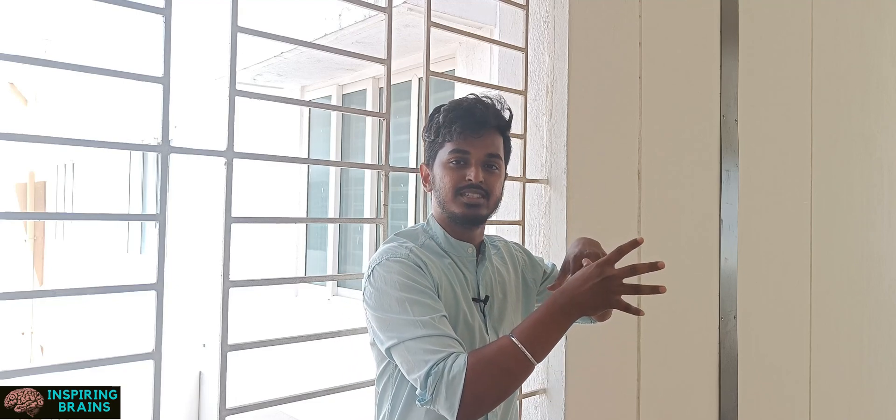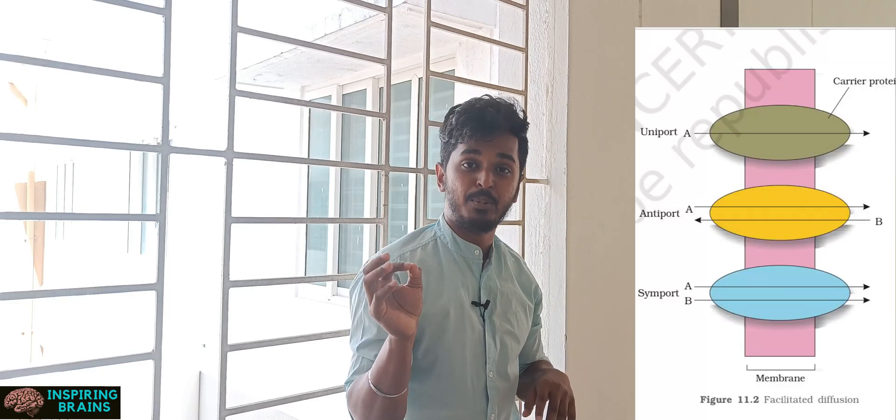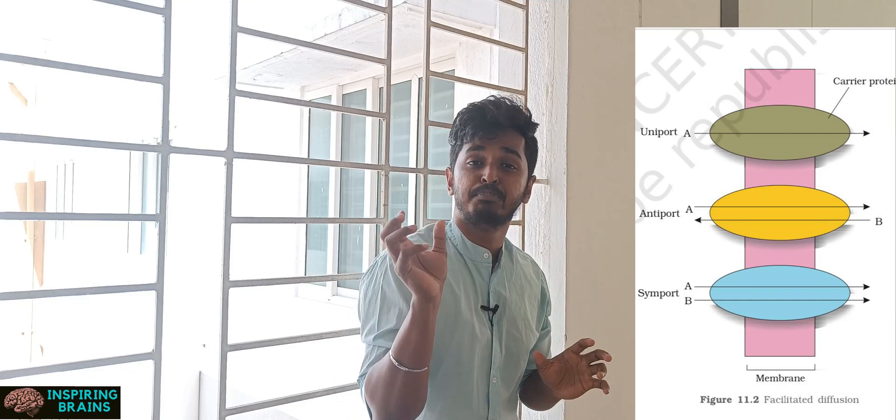The third important technique is cross-correlation. Many students complain that even after studying NCERT completely they couldn't score well — it's because they lack correlation. For example, in neural control and coordination, when studying the sodium-potassium pump: three sodium ions go in and two potassium ions go out, so they travel in opposite directions — this is called antiport. Also, whenever you hear the term 'pump,' it always means active transport. You must correlate this with chapters on active and passive transport.